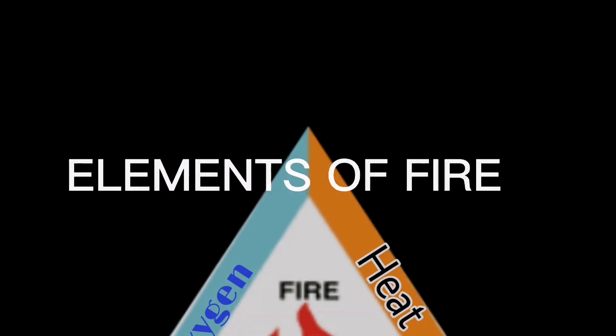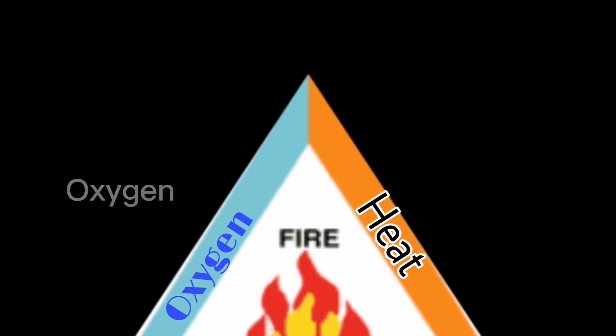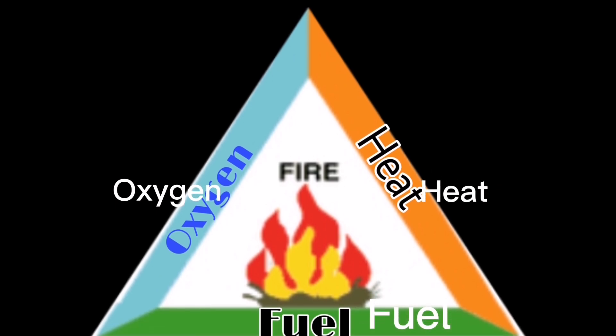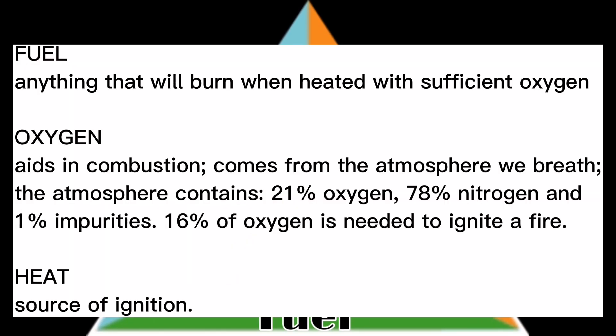Elements of fire: oxygen, heat, and fuel. Fuel is anything that will burn when heated with sufficient oxygen. Oxygen aids in combustion and comes from the atmosphere we breathe. The atmosphere contains 21% oxygen, 78% nitrogen, and 1% impurities. At least 16% of oxygen is needed to ignite a fire. Heat is the source of ignition.